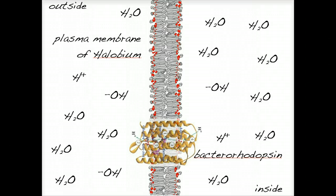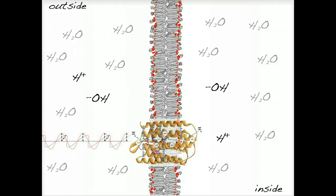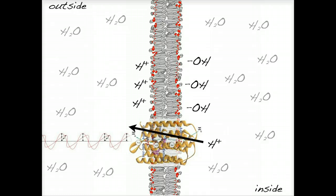This is the plasma membrane of the cell that contains the protein bacteriorhodopsin. Bacteriorhodopsin can absorb visible light, and when it absorbs that light, hydrogen ions from the inside of the cell are translocated to the outside, to the extracellular space.